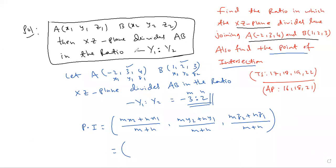The formula requires substituting: M is -3 into X2 which is 1, plus N which is 2 into X1 which is -2, by M plus N which is -3 plus 2. MY2: -3 into Y2 which is 2, plus N which is 2 into Y1 which is 3, by -3 plus 2. MZ2: -3 into Z2 which is 3, plus NZ1: 2 into Z1 which is 4, by M plus N which is -3 plus 2.